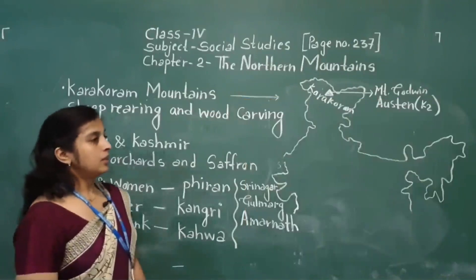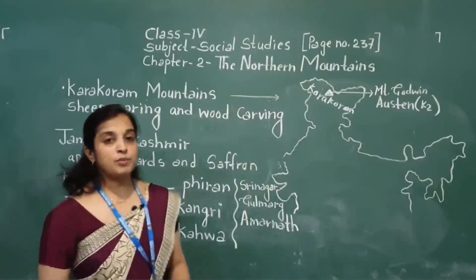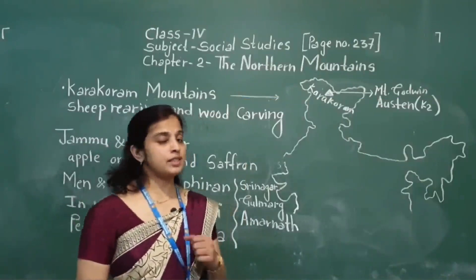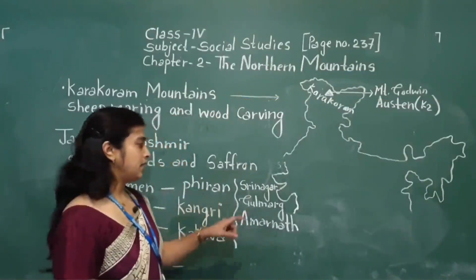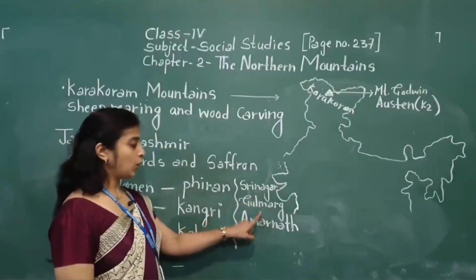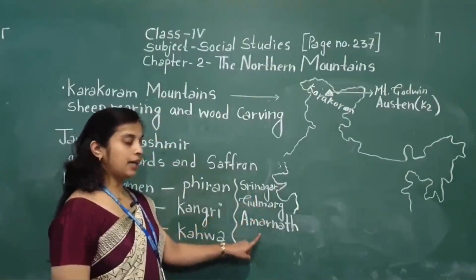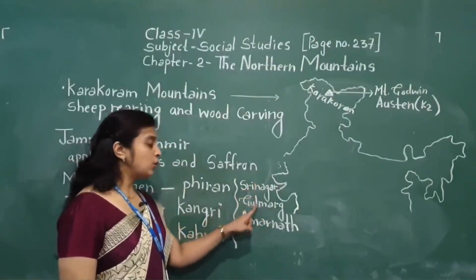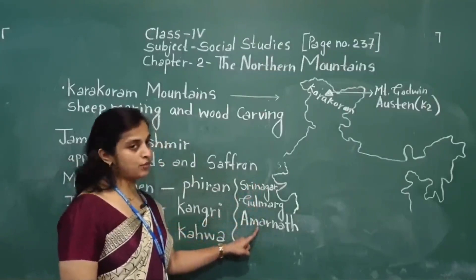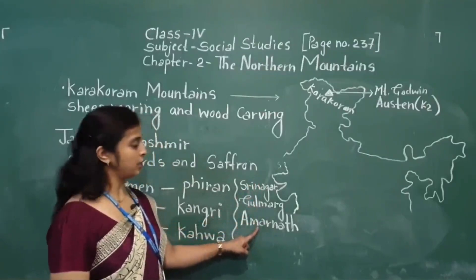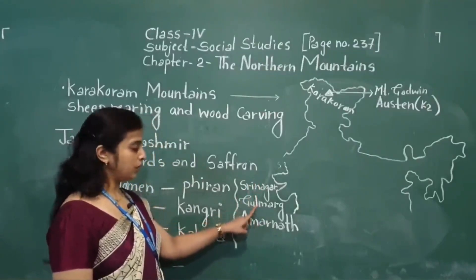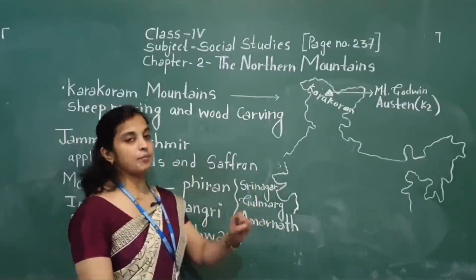Jammu and Kashmir is also famous for its cities like Srinagar, Gulmarg, and Amarnath. These are the tourist attraction places of Jammu and Kashmir.